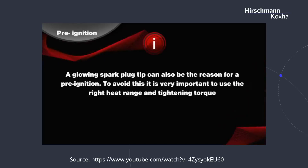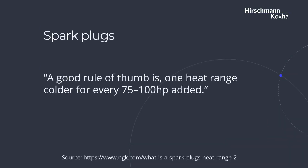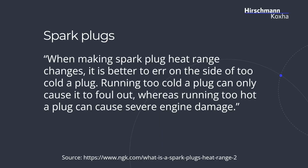This is where NGK recommends to use the right heat range. NGK states: a good rule of thumb is one heat range colder for every 75 to 100 HP added. Most of you recommend running the BCPR 7ES, which is basically a colder plug than the one used normally in the engine. NGK says: by making spark plug heat range changes, it is better to err on the side of a too cold plug. Running too cold a plug can only cause it to fall out, whereas running too hot a plug can cause severe engine damage.